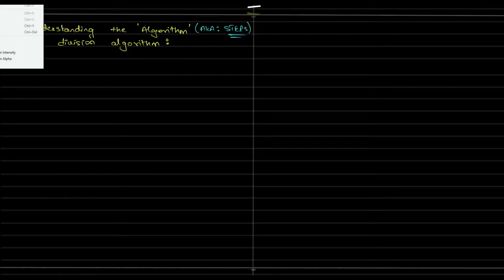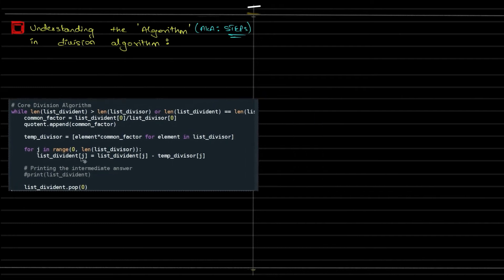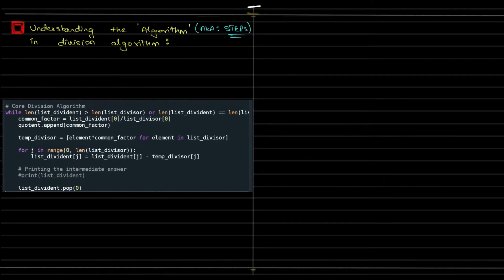We look into the division algorithm with the help of the coded language, with the help of the Python code that I have written. So this is where it starts. The first line is just like a heading. So the first line is while.